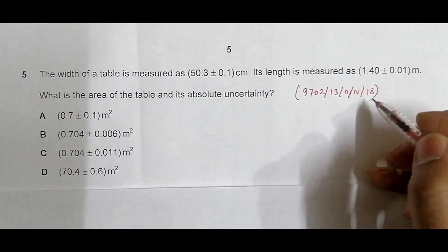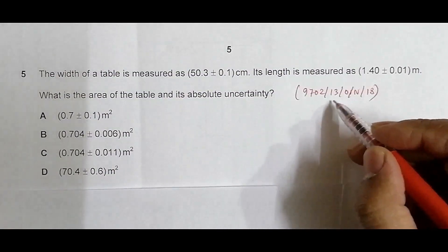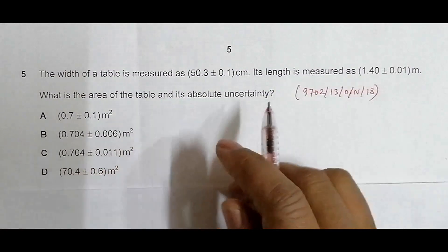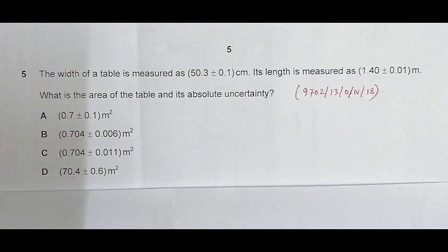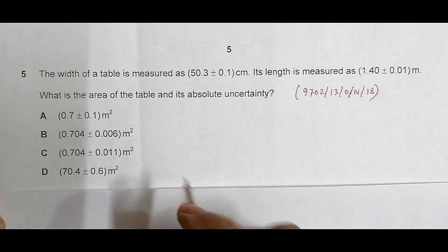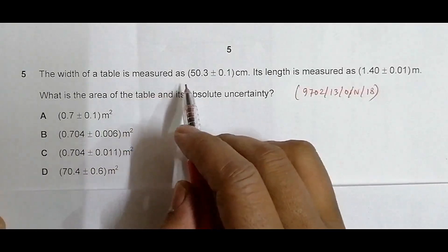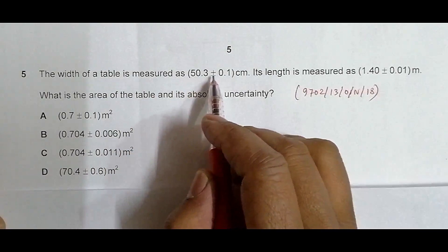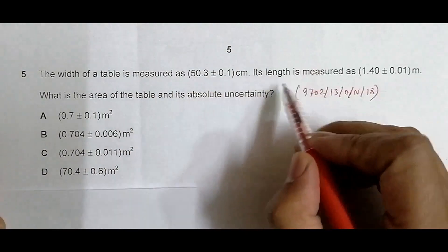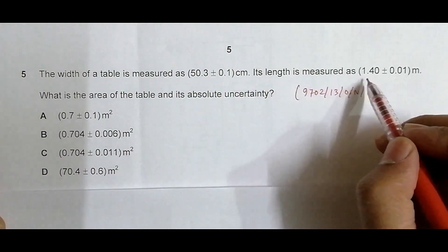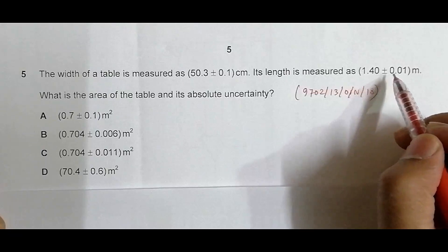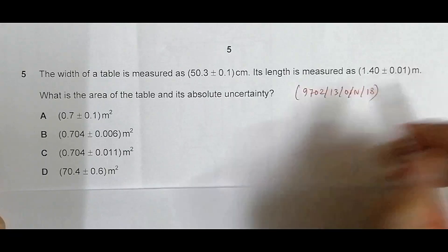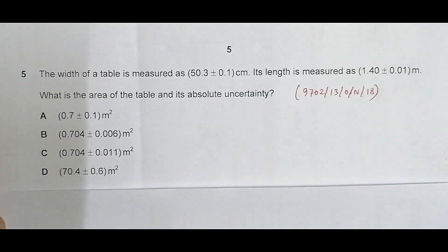Hello folks, this is again 2018 paper 1, October November, and the question number is 5. It is concerned with uncertainties. The width of a table is measured as 50.3 ± 0.1 centimeter, and its length is measured as 1.40 ± 0.01 meters. What's the area of the table and its absolute uncertainty?